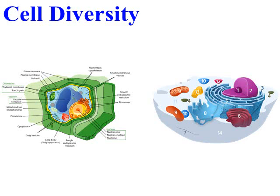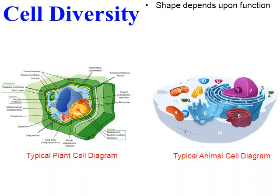Next I'd like to go into the diversity of cells. One thing to know is that the shape of a cell really depends upon its function. You can flip through any biology textbook and see pictures of plant cells and animal cells depicted pretty much the same — plants as rectangular or square shaped, animals as round circular shaped. Keep in mind that when you see diagrams like this in your textbook, these are very simplistic general statements. Not every animal cell is round, and not every plant cell is rectangular.